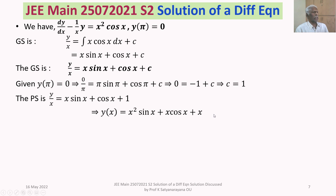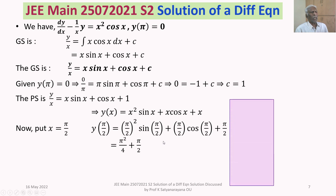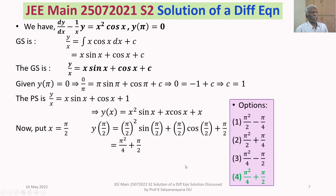Now we evaluate y at x = π/2. Substituting: y(π/2) = (π/2)² sin(π/2) + (π/2) cos(π/2) + π/2. Since sin(π/2) = 1 and cos(π/2) = 0, this gives π²/4 + 0 + π/2 = π²/4 + π/2. Looking at our options, this matches Option 4. Therefore the answer is Option 4.